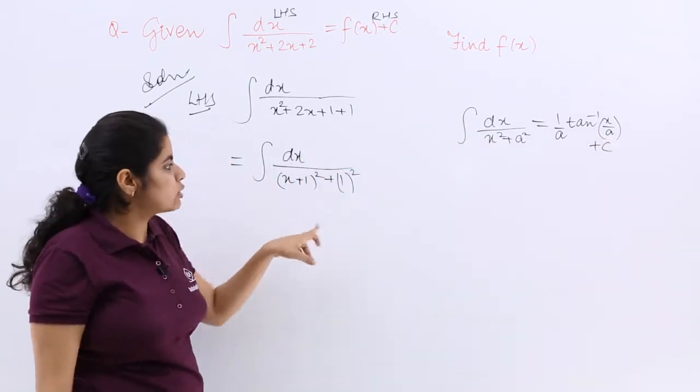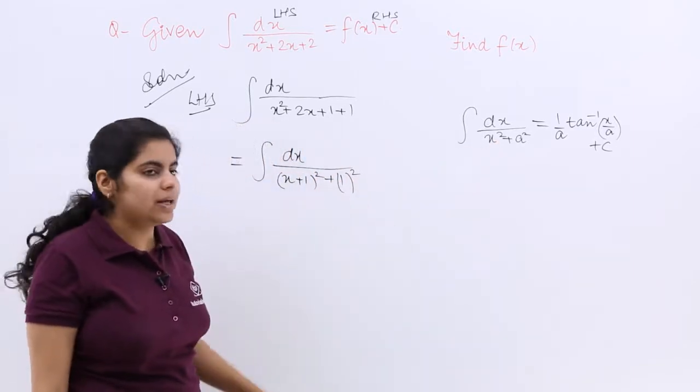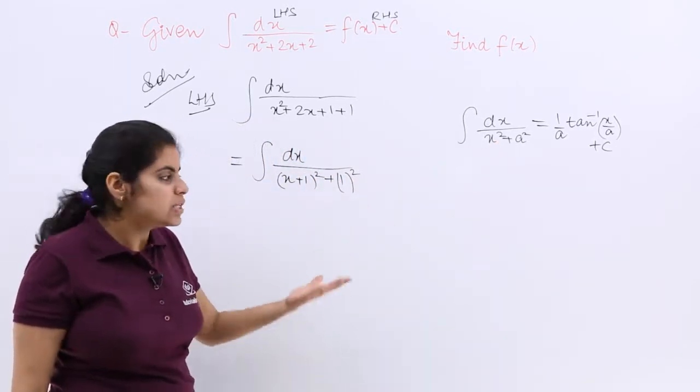See, x square would be x plus 1 whole square and a square would be 1 square. So the same thing is there. So what is the value?